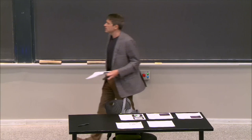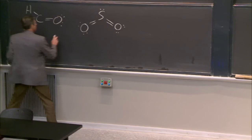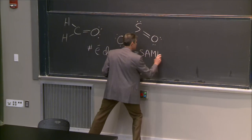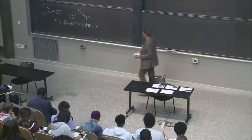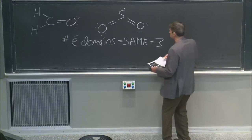Both of these molecules, when you're thinking about VSEPR, the number of electron domains — remember, that's how we start — the number of electron domains is the same for both of them. We did this on Wednesday. And if the number of electron domains is the same, then the electron domain geometry is trigonal planar.